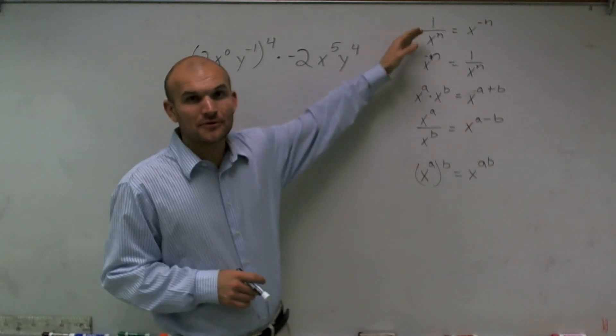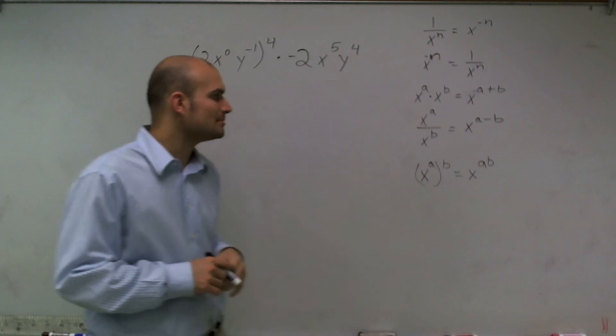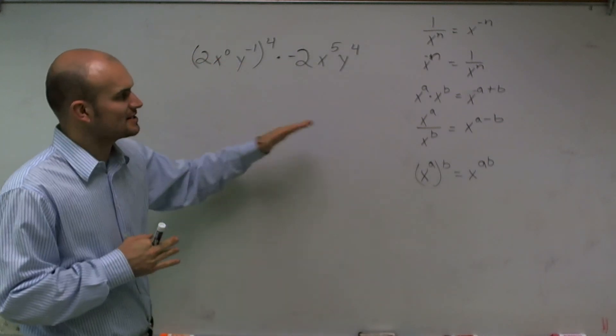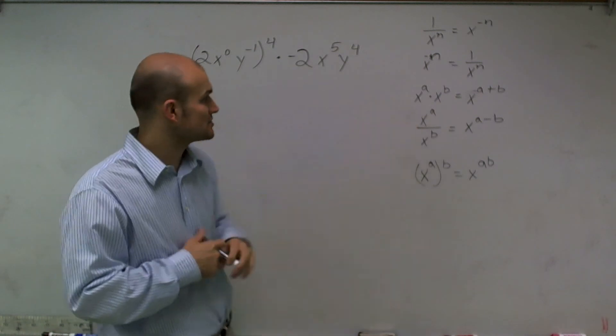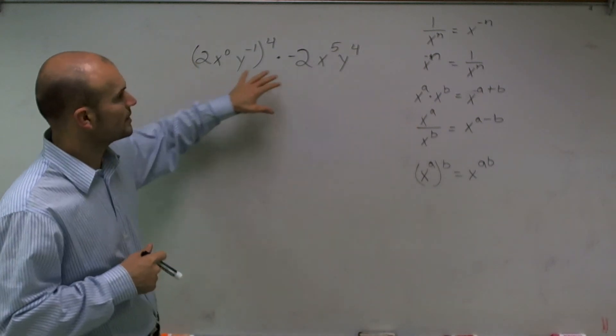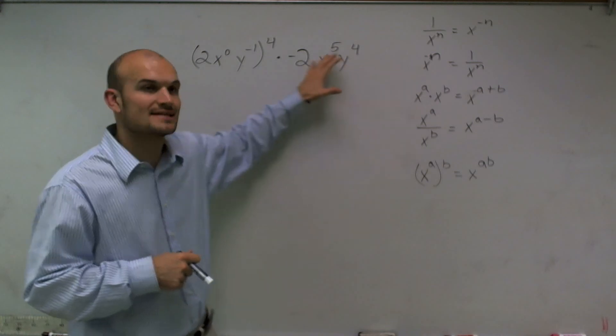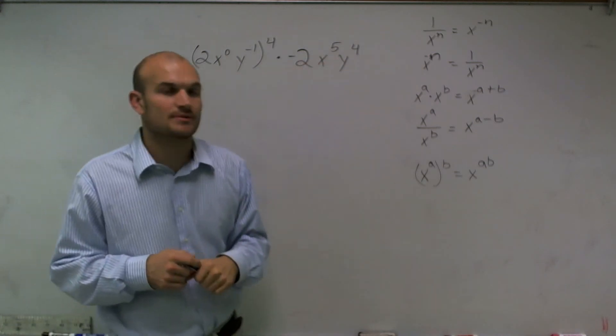So I wrote down the rules of exponents that I'm going to use in this problem. I'm going to try to touch base on almost all of them, except for the division. This one doesn't have any division in here. But I want to go through each one of these rules as I'm explaining how I'm going to use them to simplify it.